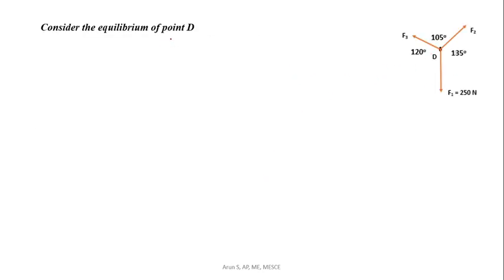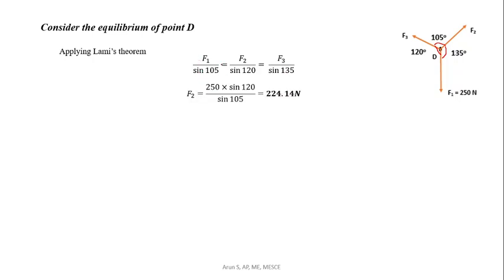First, we consider the equilibrium of point D and apply Lami's theorem: F1/sin(105°) = F2/sin(120°) = F3/sin(135°). Substituting F1 = 250N, we get F2 = F1 × sin(120°)/sin(105°) = 224.14N, and F3 = F1 × sin(135°)/sin(105°) = 183.10N.